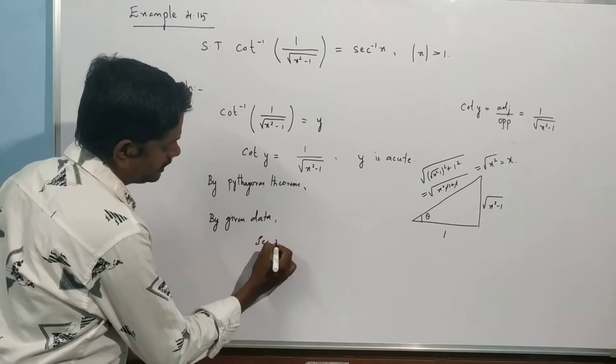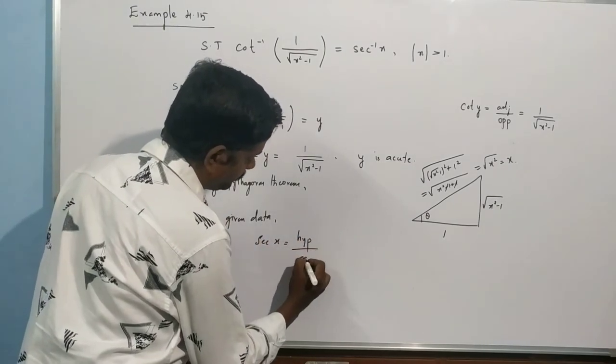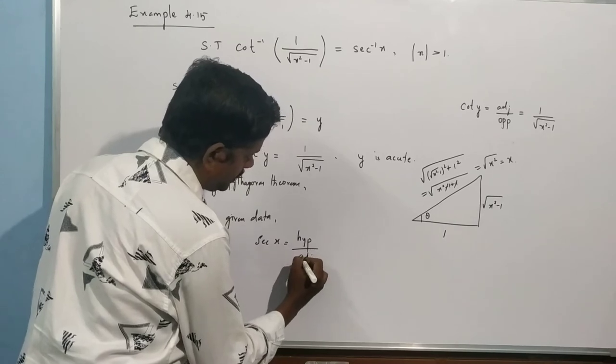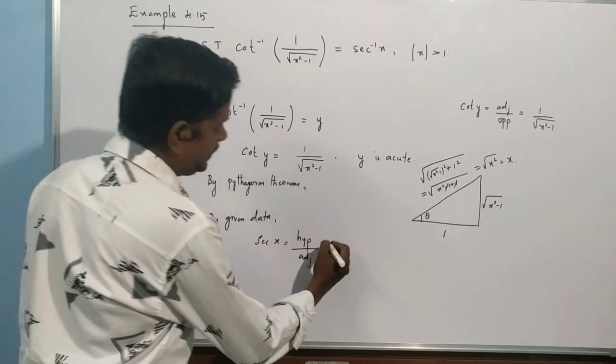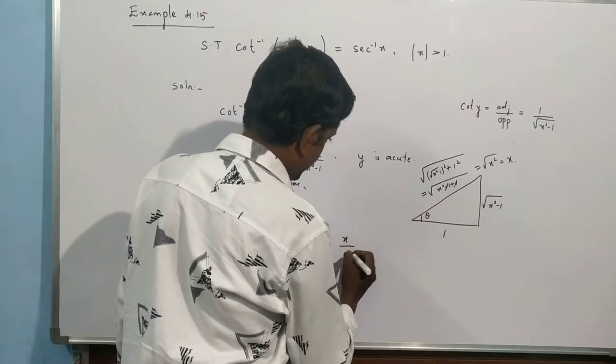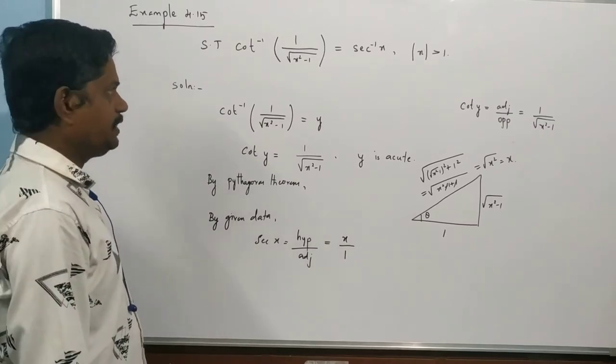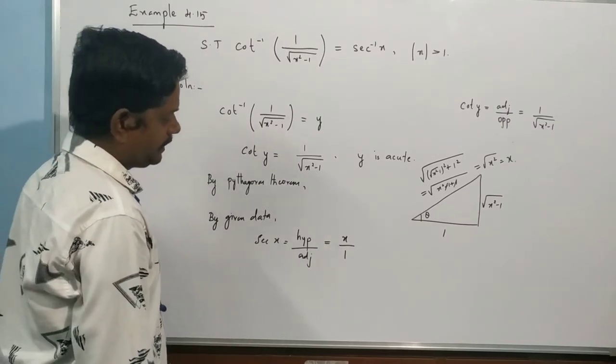With this, we're given that sec x. Sec is hypotenuse by adjacent. Upon sec x, hypotenuse is x by adjacent 1. So sec x is x by 1. Correct?